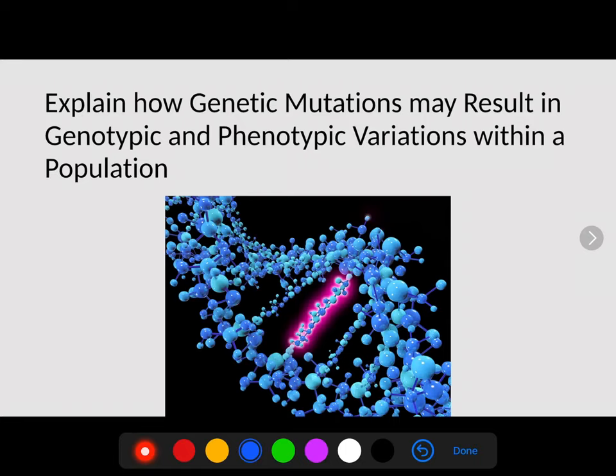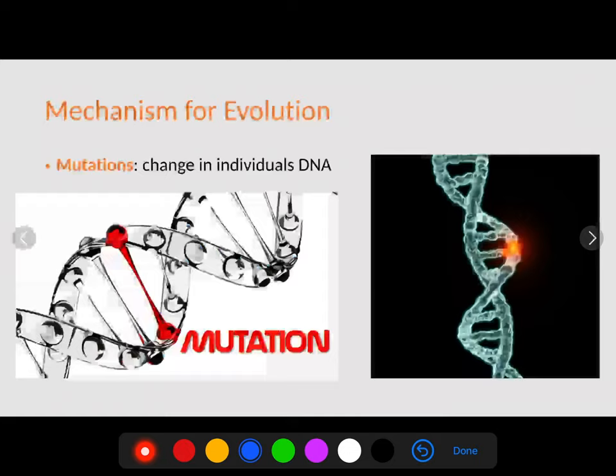Genotypic refers to the genes that we have — our genetic code. Mutations can adjust this genetic code and sometimes lead to good or bad things. Phenotypic variations are the physical characteristics of the organism, what they look like. The genotype codes for the phenotype of what they look like in a population.